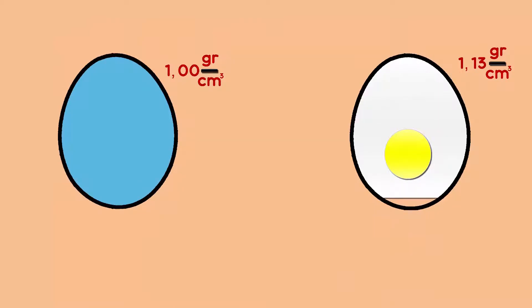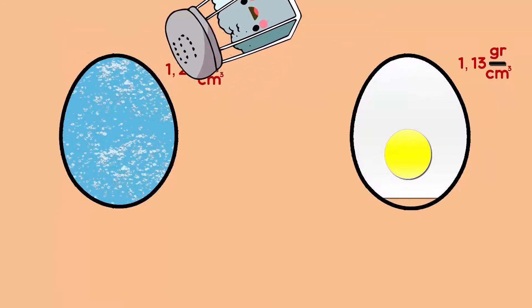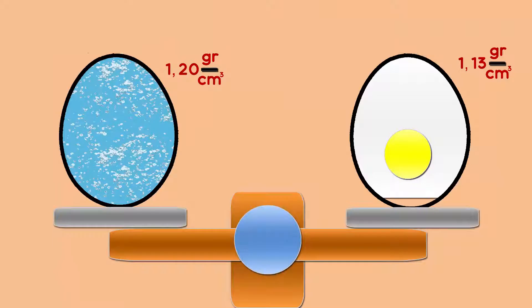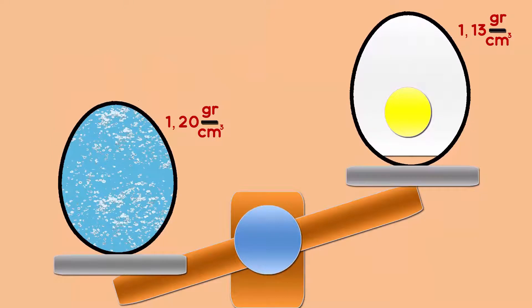But what happens if instead of fresh water we fulfill the same volume with salt water? The mass has increased, and so does the density. Then if we add enough salt, this supposed salt water egg will weigh more than our fresh egg.